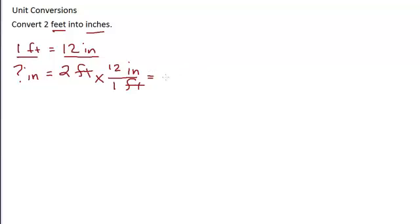And you can either plug it into your calculator or work it in your head. The unit of feet cancels. And so 2 times 12, you can divide by 1 if you want to, but it'll give you the same answer: 24 inches. So my answer is 24 inches. Converting 2 feet into inches, I get 24 inches.